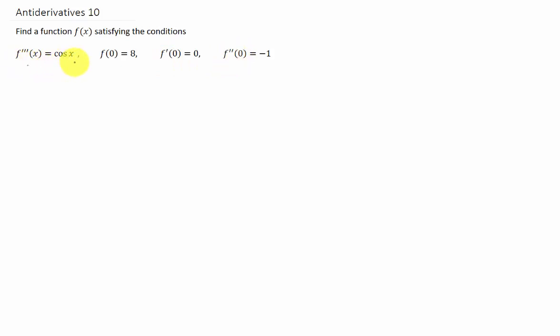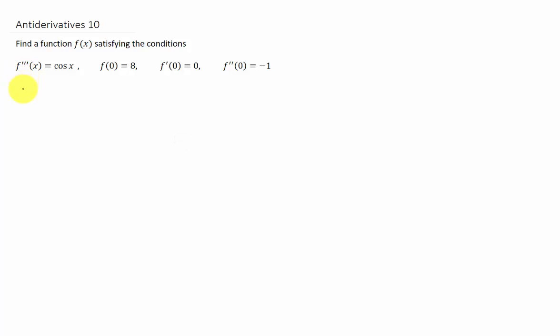So if we're given a third derivative of a function and then we're told something about its second derivative, that suggests we're going to need to take an antiderivative. Why? Because the antiderivative of f triple prime is f double prime. I also knew we're going to take antiderivatives in this video because it's titled antiderivatives.